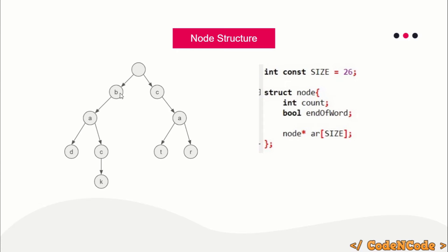The node also has a count field that tracks how many times you've passed through each node. For example, when inserting 'bad', b, a, and d each get count one. When I then insert 'back', count of 'b' becomes two, count of 'a' becomes two, count of 'c' and 'k' are one. This helps when there are many words — say 10^4 or 10^5 — and queries ask how many words a given string is a prefix of. You just follow the string in the trie and the count at the final node gives the answer.